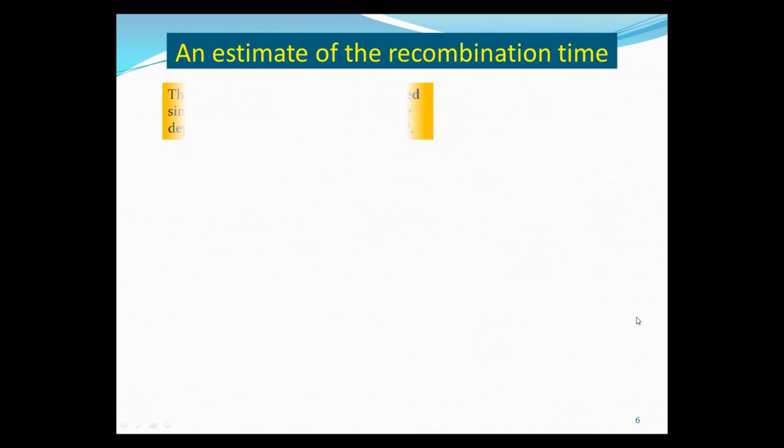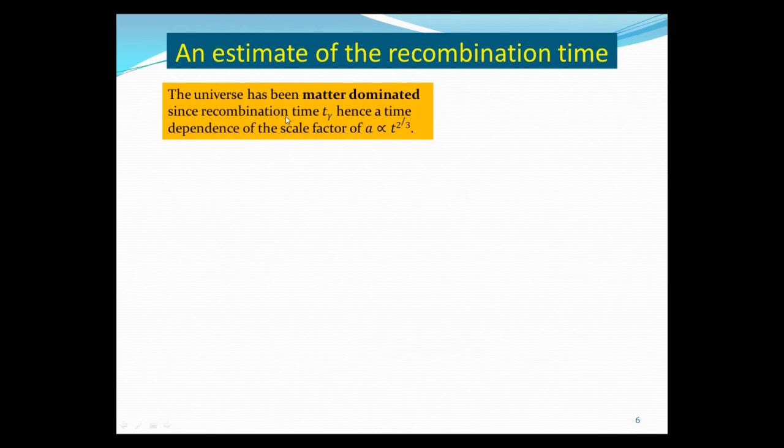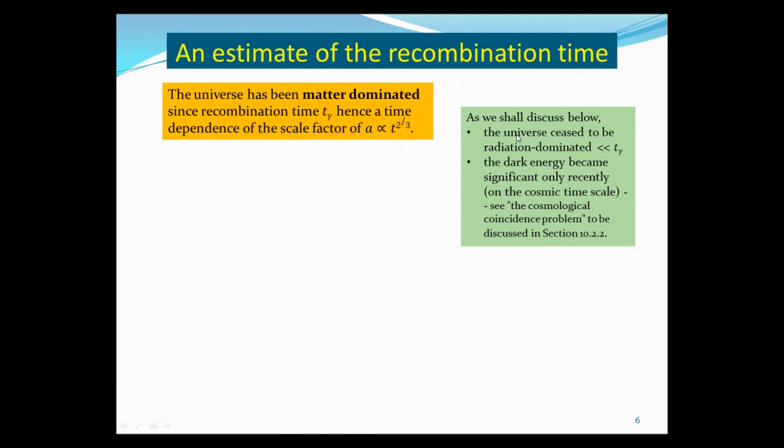So when did this recombination time take place? We know the universe has been matter dominated since the recombination time, with the scale factor going like time to the 2/3 power for a flat matter-dominated universe. As we shall discover, the universe seems to be radiation dominated way before the recombination time. Also, there's a possibility of expansion due to dark energy, but that's only recent, so we can ignore these factors.